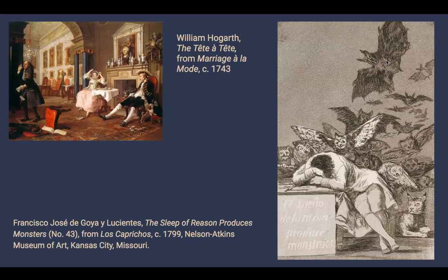Francisco de Goya bridges the gap between the Enlightenment and Romanticism. Born in 1746, he came of age at the height of Enlightenment thinking. His print series Los Caprichos, published in 1799, focuses on social commentary — not unlike Hogarth's satirical paintings of the upper classes. The series ridicules, and I quote from Goya himself, the 'multitude of extravagances and follies' shared by society. The most famous print from the series, commonly reproduced in history textbooks, is The Sleep of Reason Produces Monsters. The allegorical figure of reason naps, oblivious to the horrible flock of night creatures that materialize out of the darkness behind him.